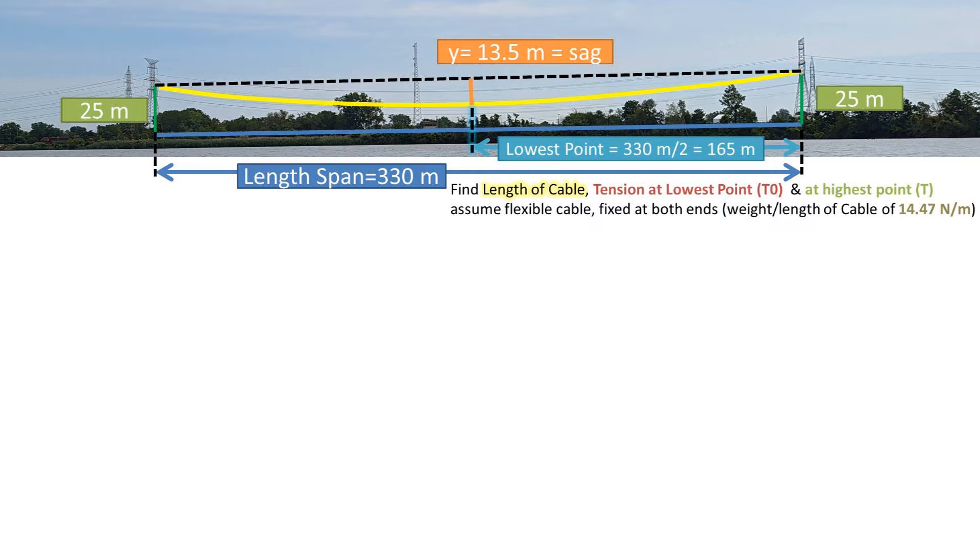We want to find the length of the power cable, the tension at the lowest point which will be referred to as 0.0, and the highest point or at the tower. We will assume a very flexible cable that is fixed and not allowed to move on either end, and that the cable's weight per unit of length is 14.47 newtons per meter. This is a made-up value.